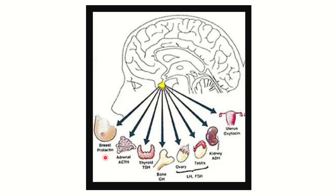The pituitary gland influences breast development in females. It also has a direct influence on the adrenal cortex. The thyroid gland is stimulated through thyroid-stimulating hormone from the pituitary, which causes the release of thyroid hormones.